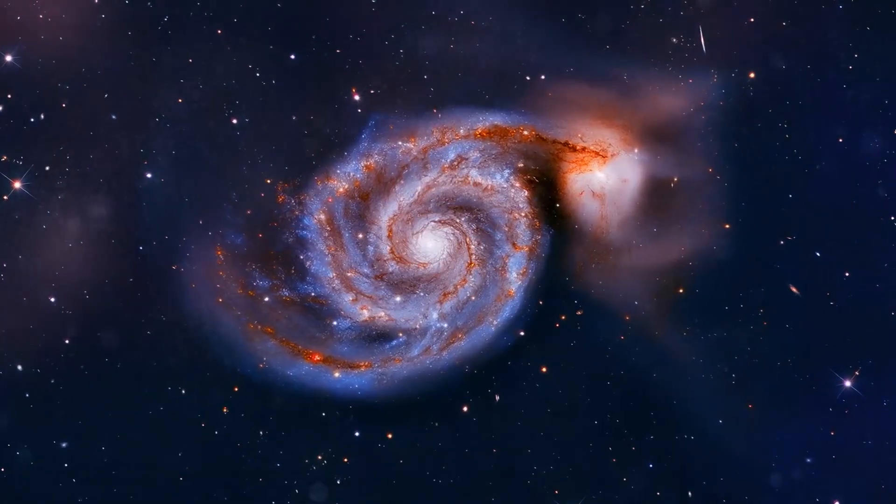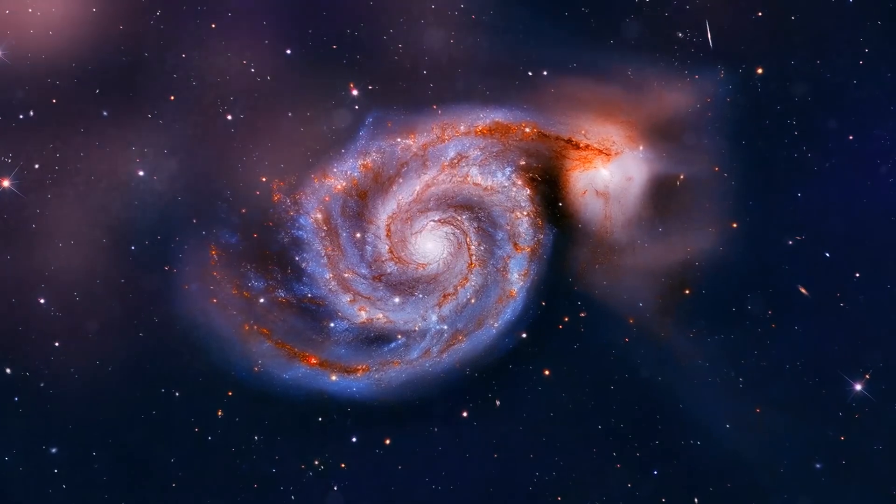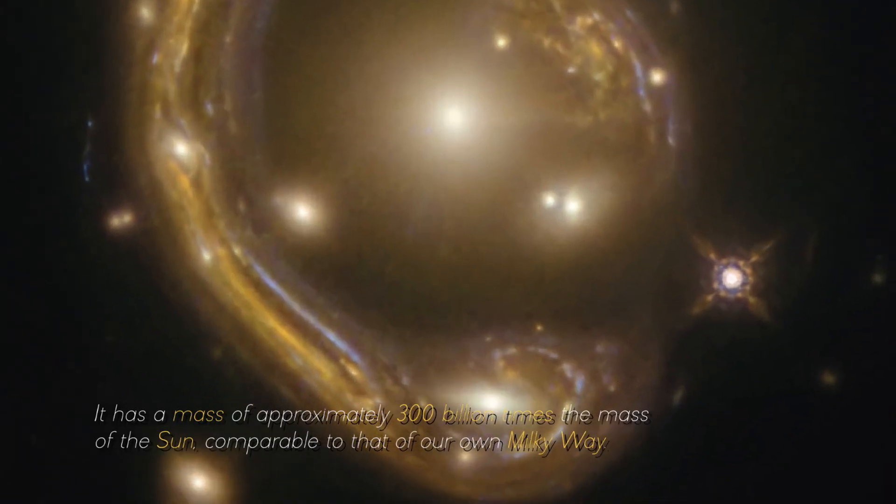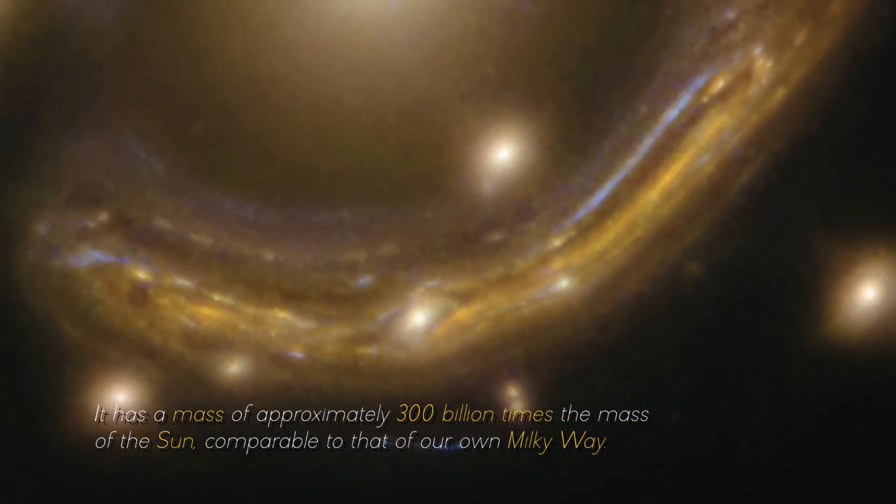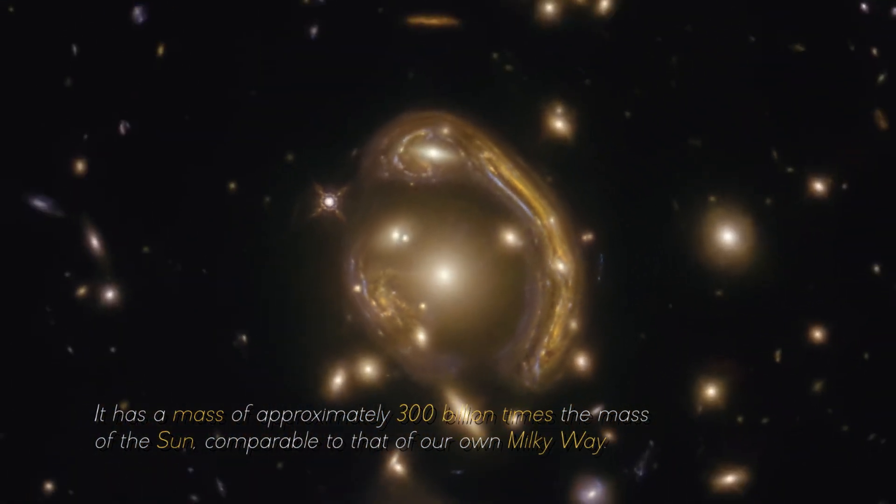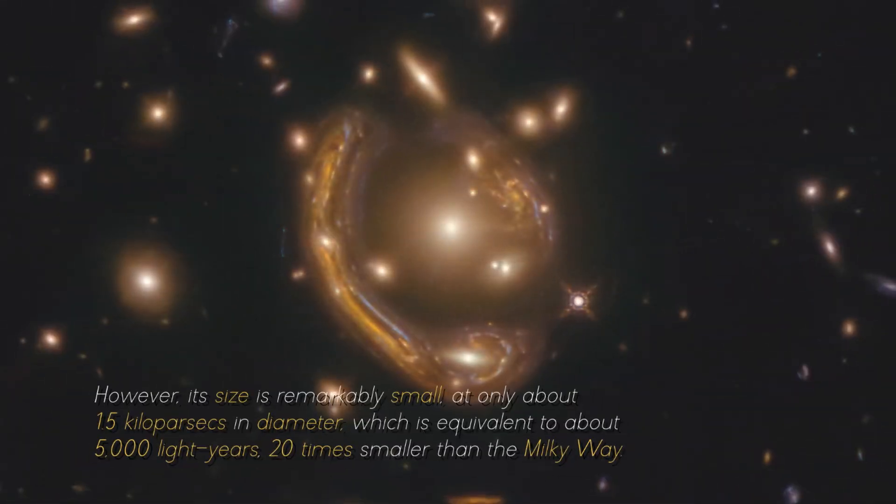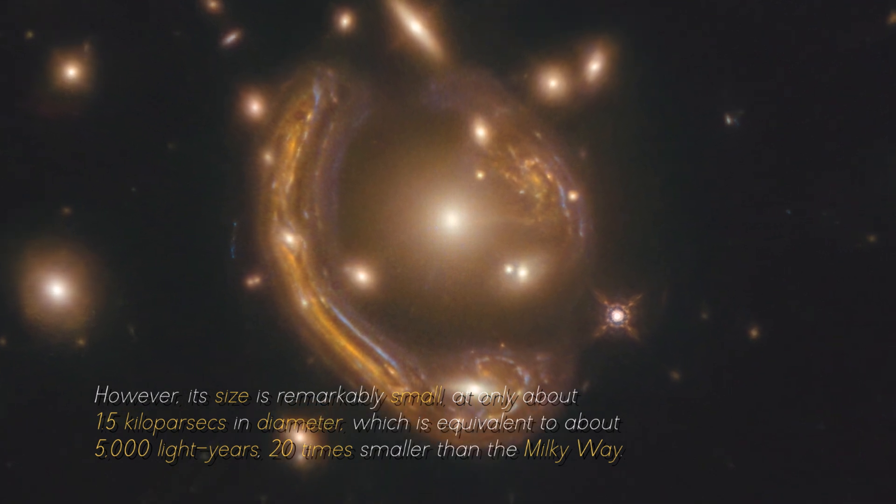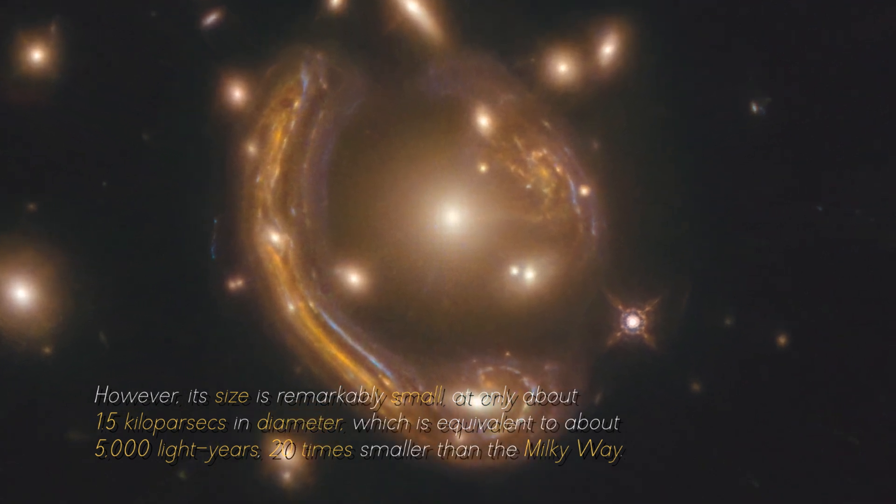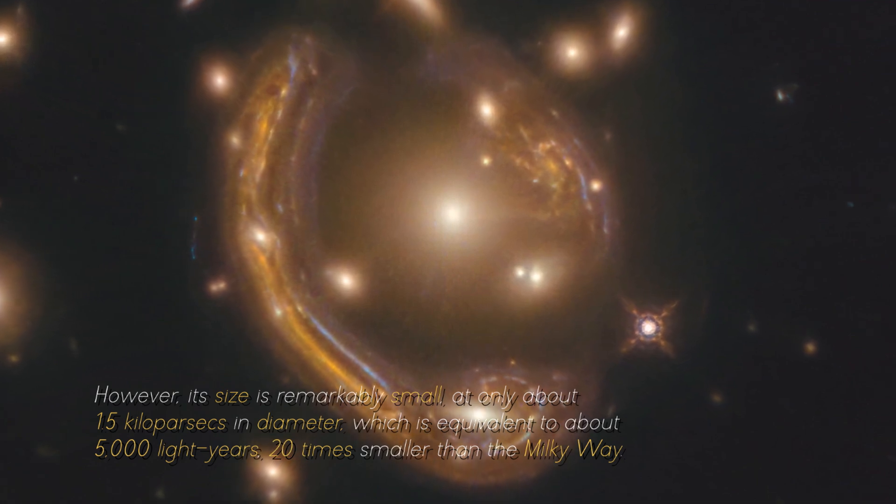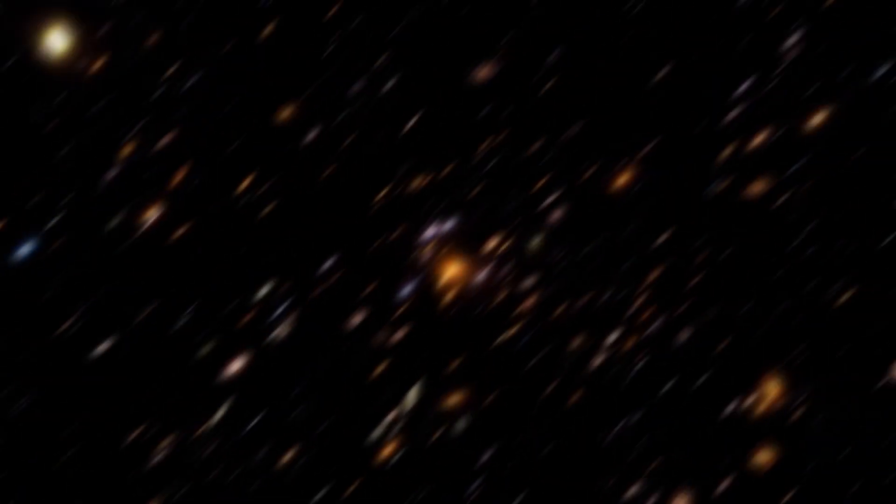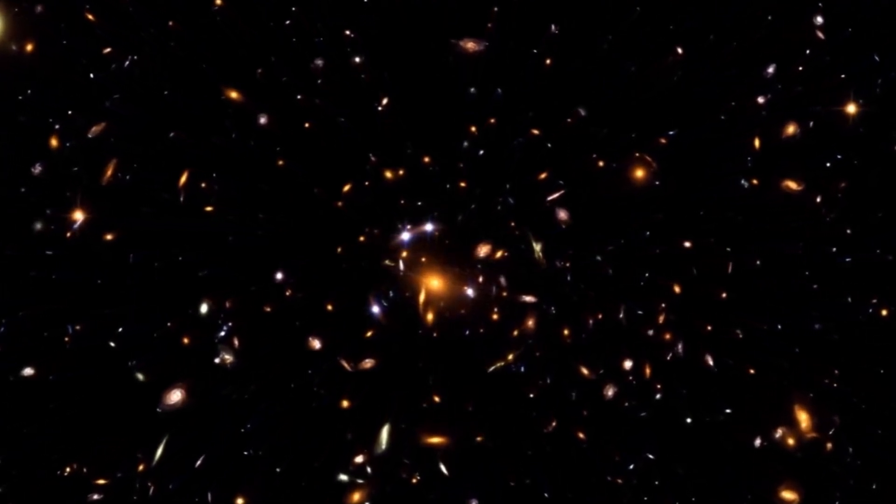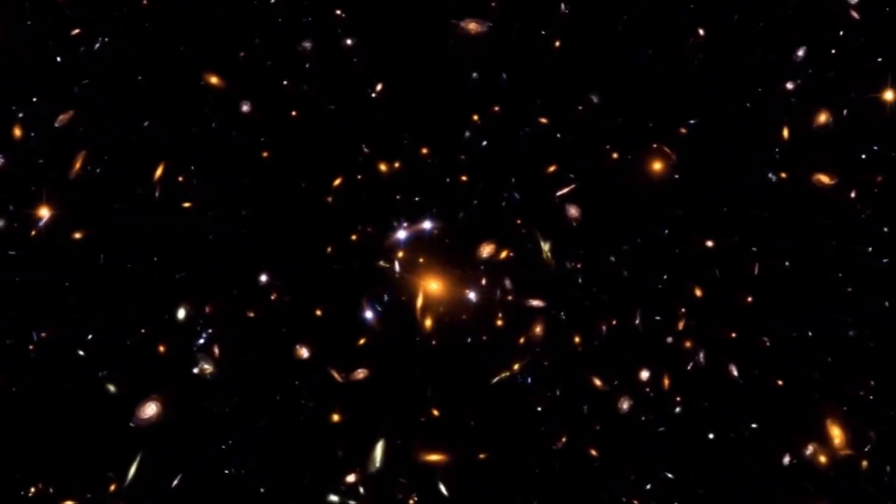However, the quiescent galaxy discovered by the James Webb Space Telescope is an extreme example of this type of galaxy. It has a mass of approximately 300 billion times the mass of the Sun, comparable to that of our own Milky Way. However, its size is remarkably small, at only about 1.5 kiloparsecs in diameter, which is equivalent to about 5,000 light-years, 20 times smaller than the Milky Way. This characteristic makes the galaxy exceptionally dense, with the stellar mass density a thousand times greater than the average density of the universe.